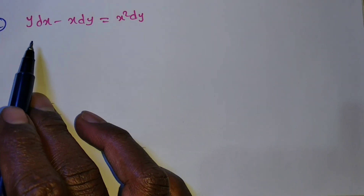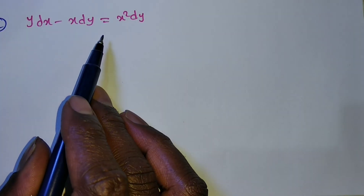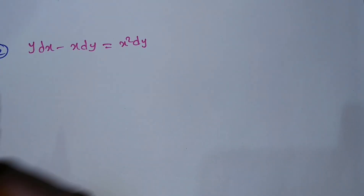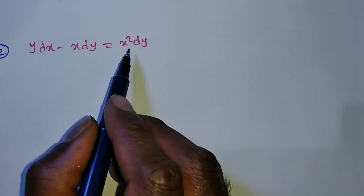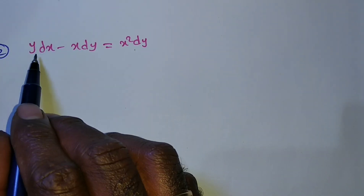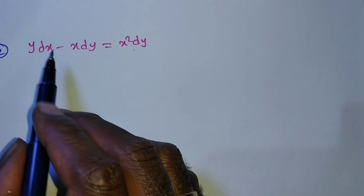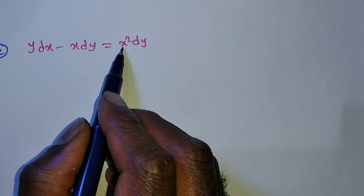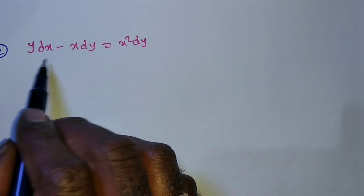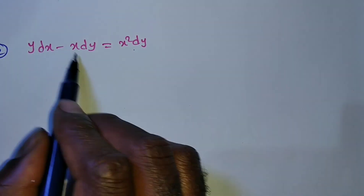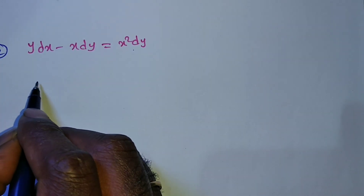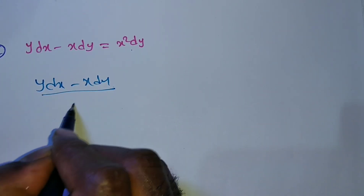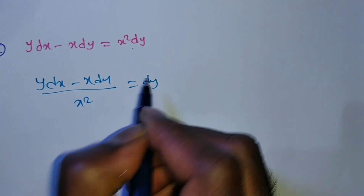Now the second problem: y dx − x dy = x² dy. So how to solve this one? We have y dx − x dy with a dy term and dx term. By observation, this quotient should relate to a y term, and here x² is there. So divide with x².